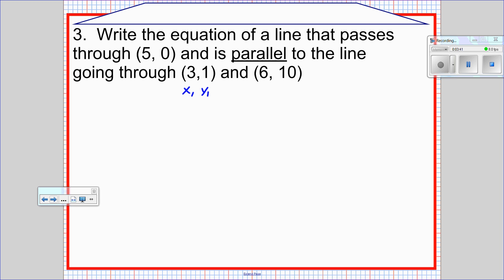We've got x1, y1 and x2, y2. So the slope of the line we were given, the slope between these two points, is 10 minus 1 over 6 minus 3, which is 9 thirds, which is 3. So that line is increasing. It has a slope of 3.